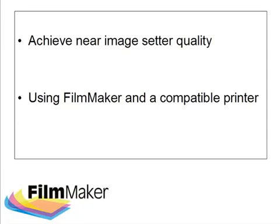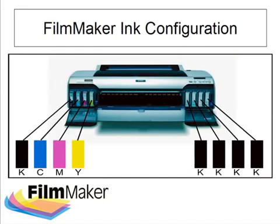In this session we're going to take a peek at how simple it is to prepare and send your images from Adobe Illustrator to Filmmaker's VPN interface and then output the job to an Epson 4880 printer. The printer has been set up with the Filmmaker ink system that has an extra four black channels to enable the production of film steps with a much greater density.